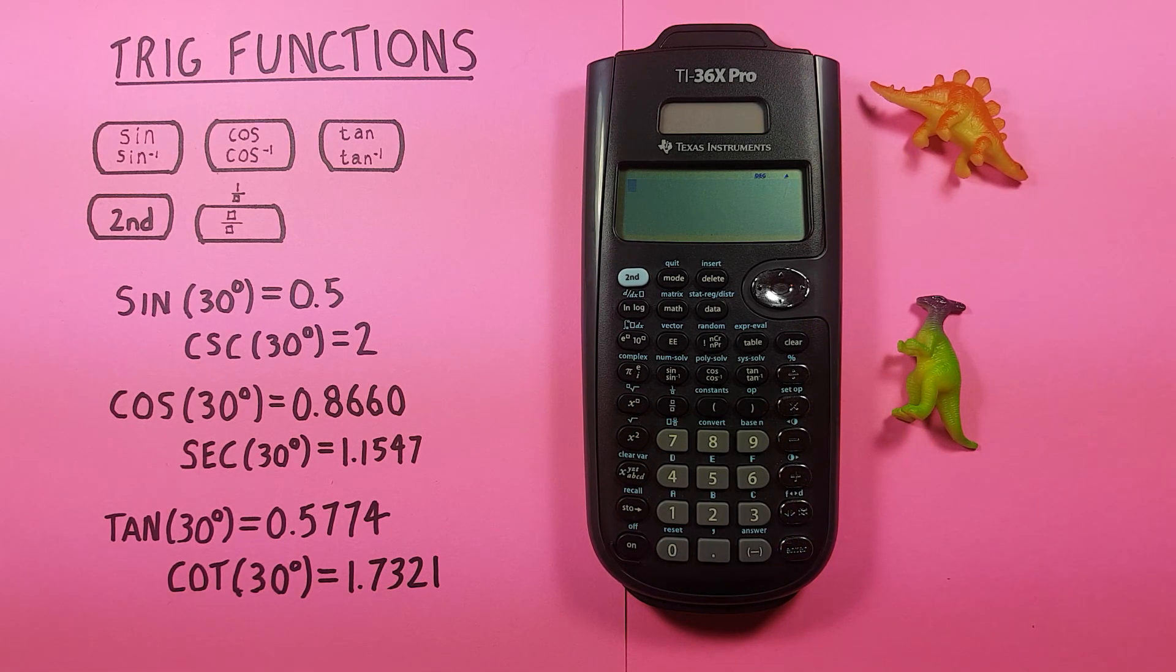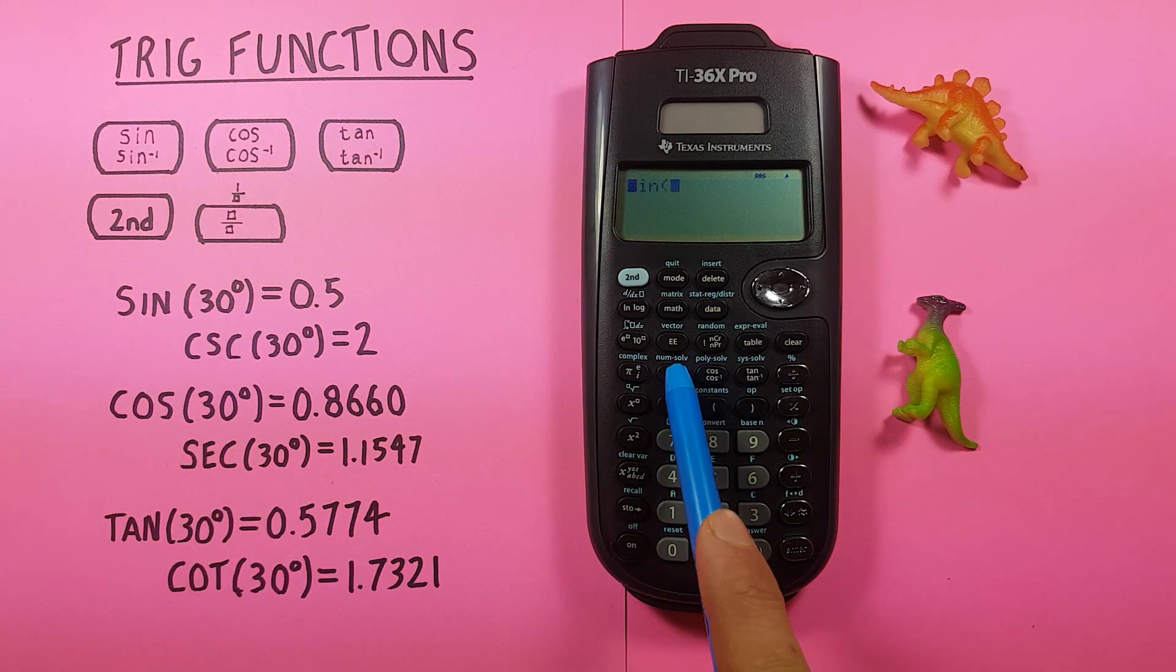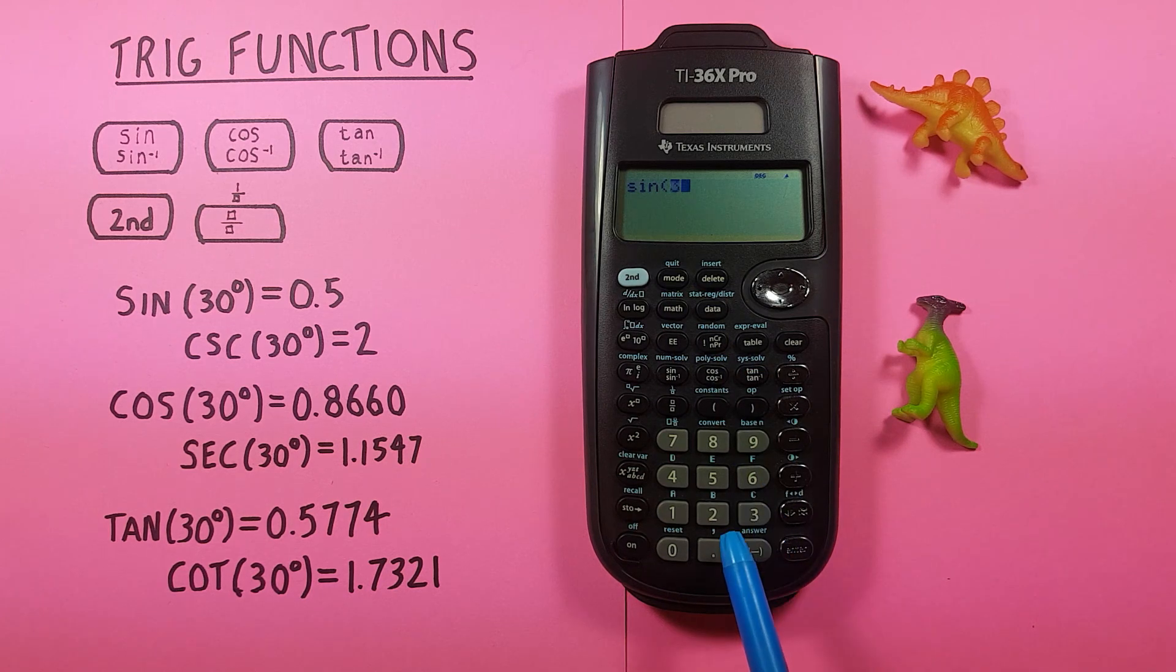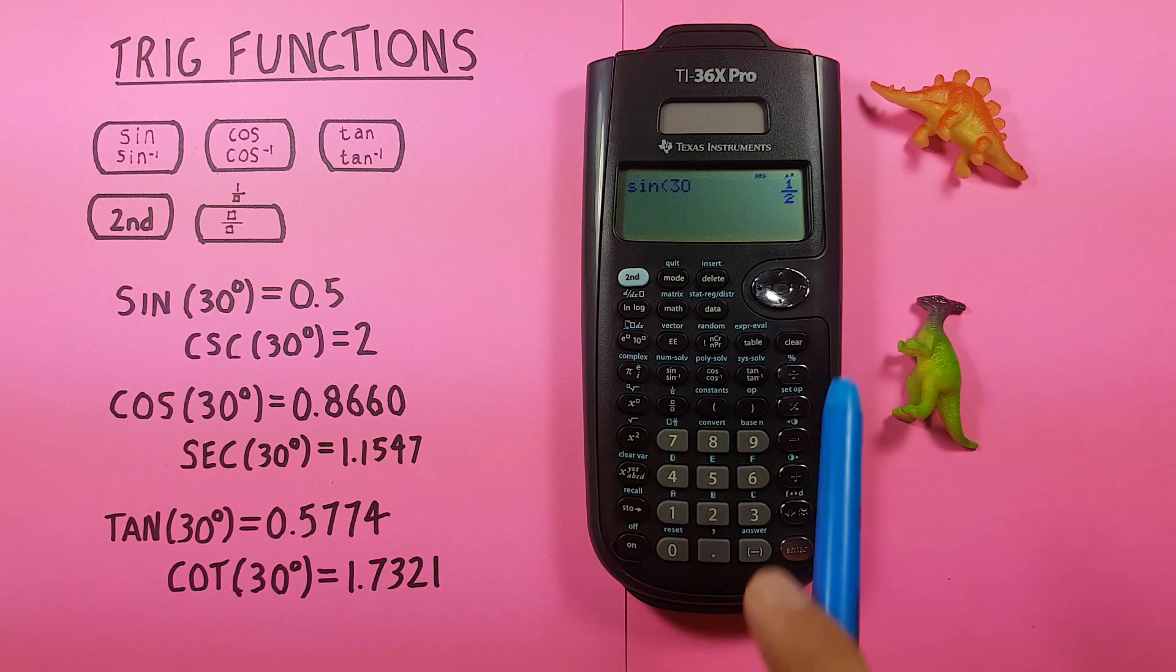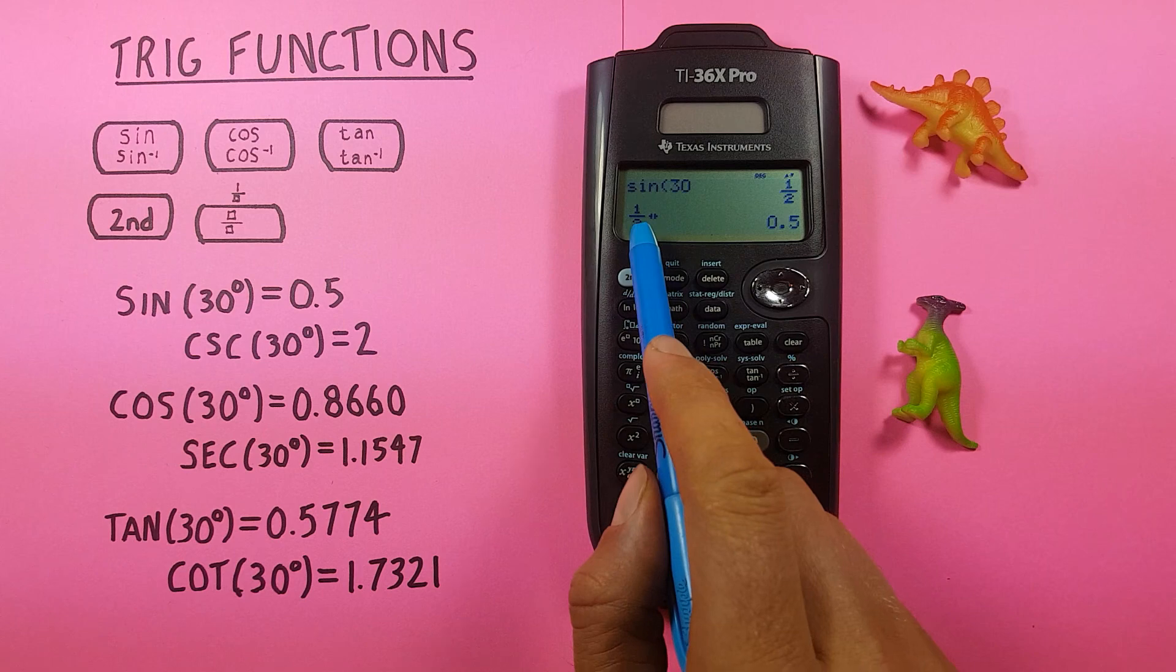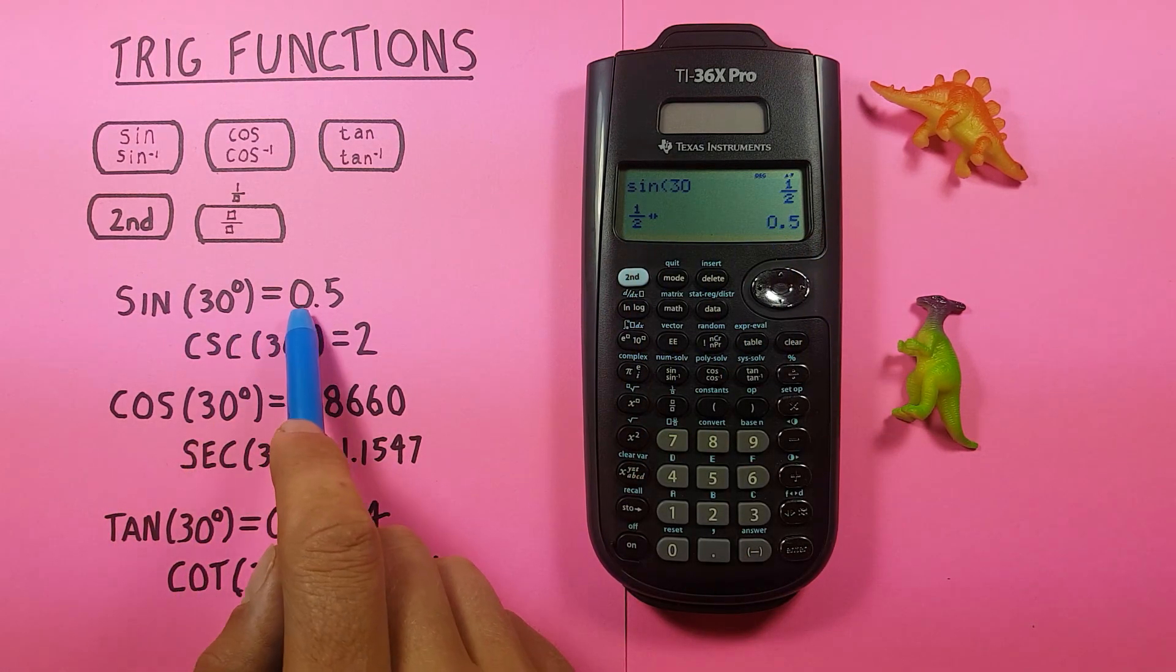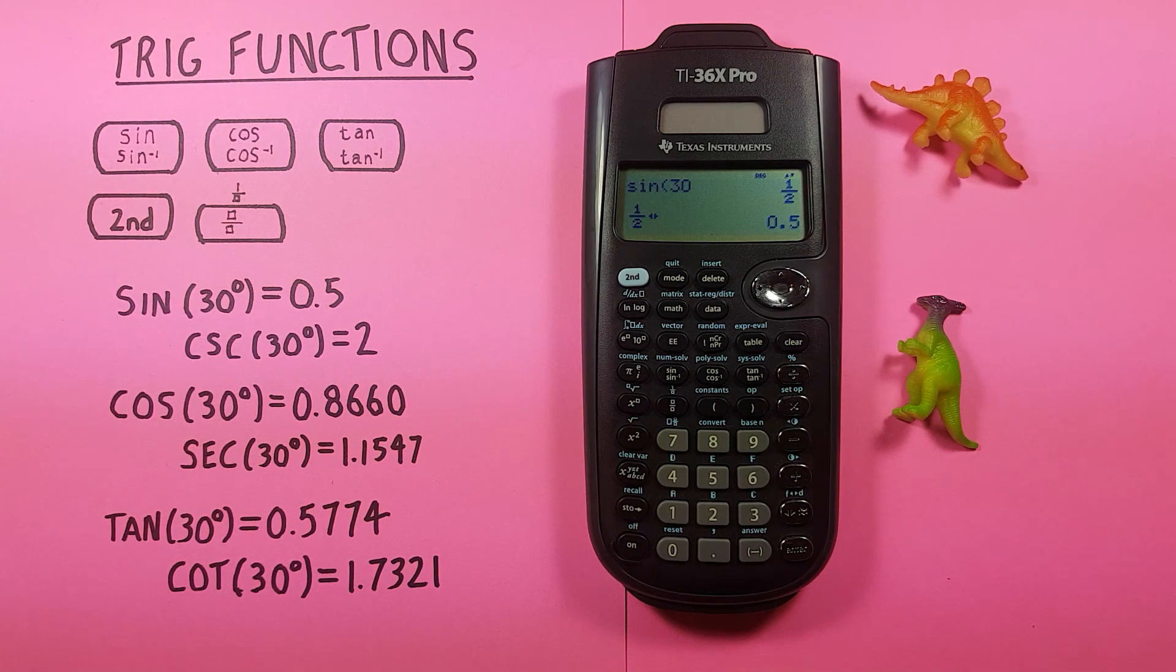Alright, starting off simple. If we want to find the sine of 30 degrees, you just press the sine key once, enter 30, and press enter. You get 1 over 2. Now remember this calculator likes to give you fractions, so if we want that in a decimal, all we have to do is press this left and right arrow key above the enter, and you can see that converts it from a fraction to a decimal. So sine of 30 is 0.5.